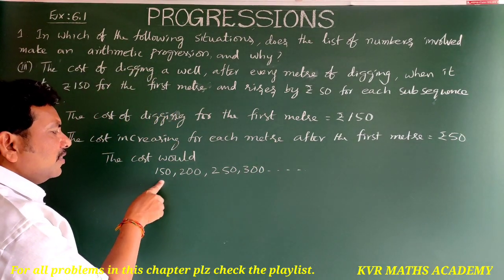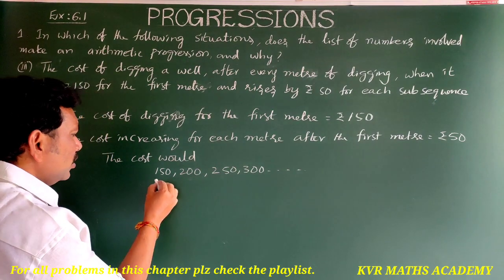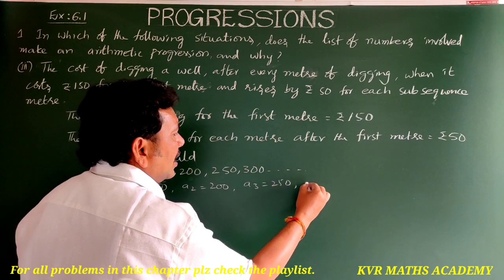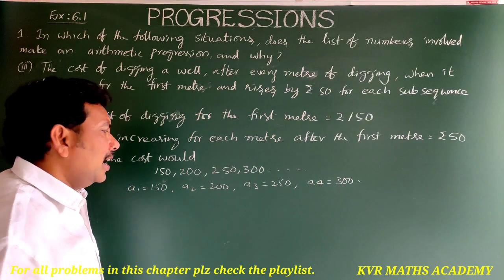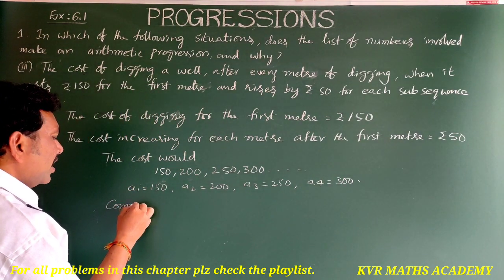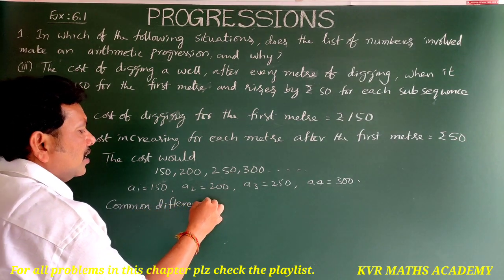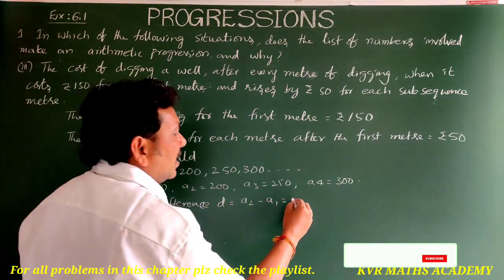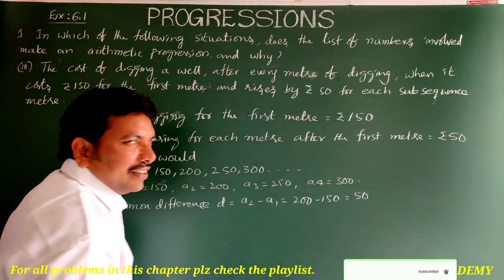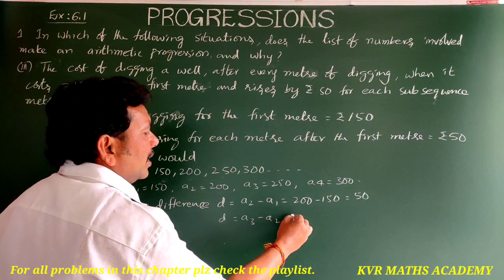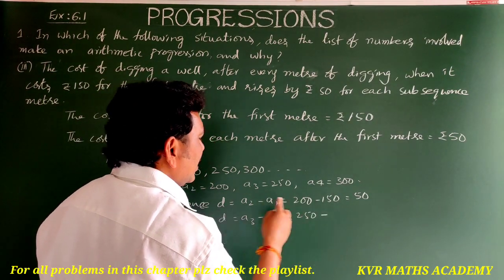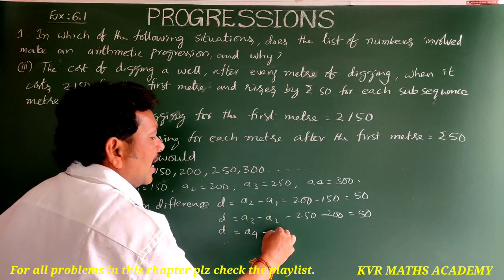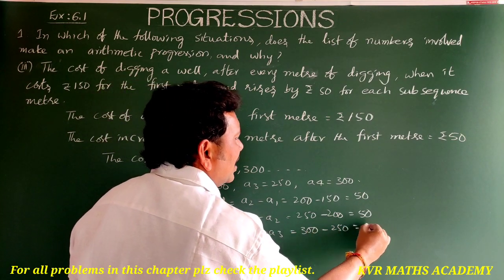So a₁ = 150, a₂ = 200, a₃ = 250, a₄ = 300. Now let us find the common difference. a₂ - a₁ = 200 - 150 = 50; a₃ - a₂ = 250 - 200 = 50; a₄ - a₃ = 300 - 250 = 50.